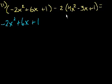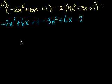Let me rewrite this part. This is minus 2x squared plus 6x plus 1. And now we have to distribute this. Let's distribute a minus 2. So minus 2 times 4x squared is minus 8x squared. That's that. Minus 2 times minus 3x, that's plus 6x. Minus 2 times 1 is minus 2.